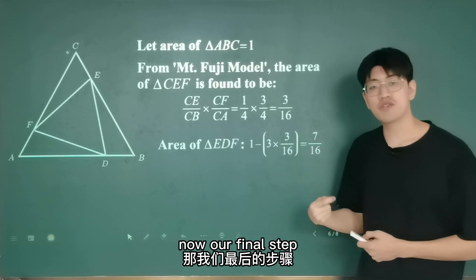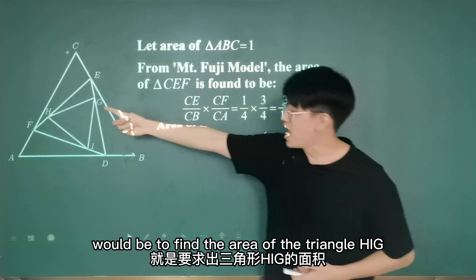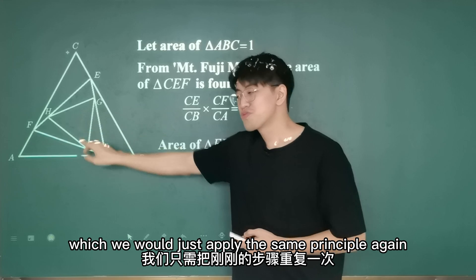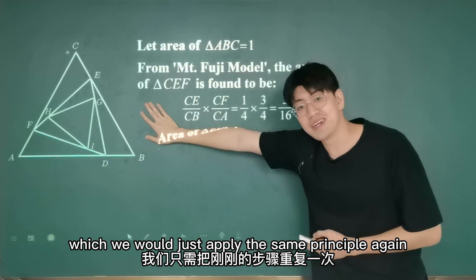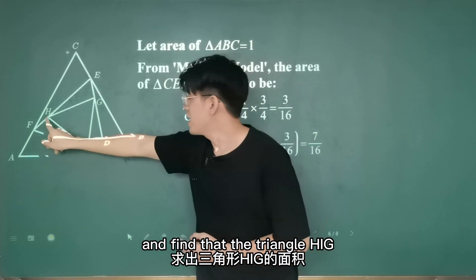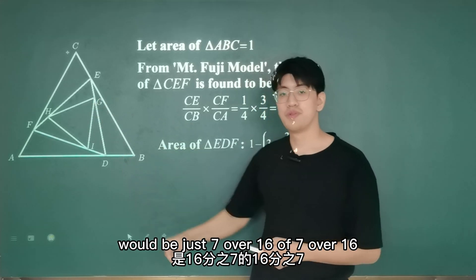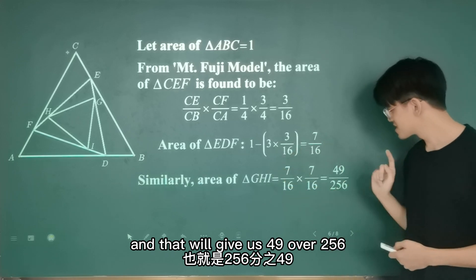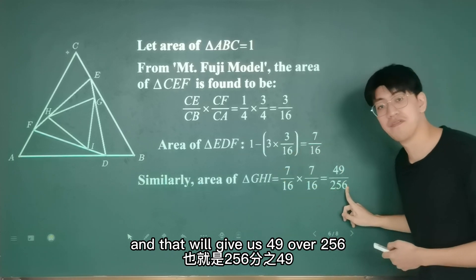Now, our final step will be to find the area of triangle HIG, which we would just apply the same principle again, and find that triangle HIG would be just 7 over 16 of 7 over 16. And that'll give us 49 over 256.